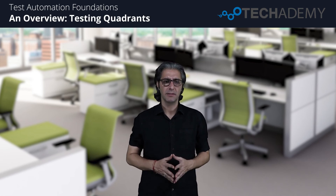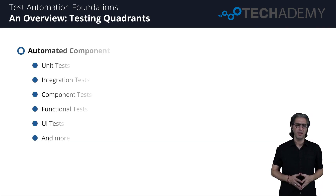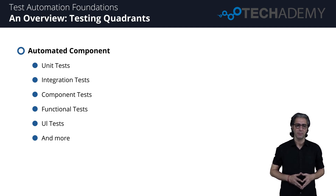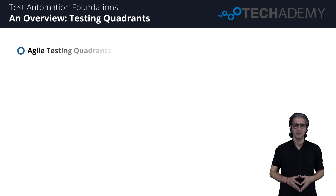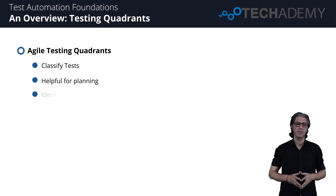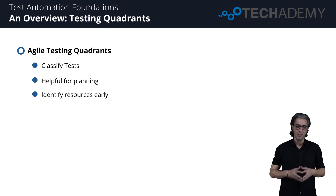Hi everybody, welcome back to the session. There are different types of automated tests — integration, component, functional, and UI tests — and the list goes on. Deciding which tests to include for a project can be difficult. Fortunately, there are models that help determine the type of tests to automate. One model we recommend is the Agile Testing Quadrants, which is used to classify tests and has been helpful for teams as they plan the types of tests to implement.